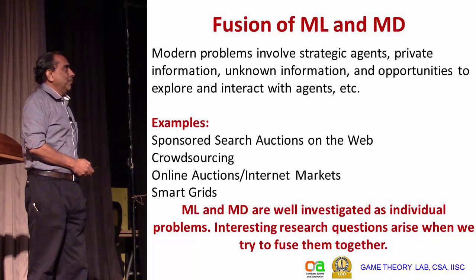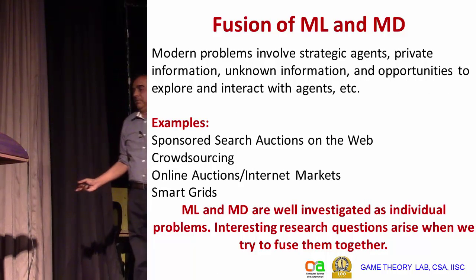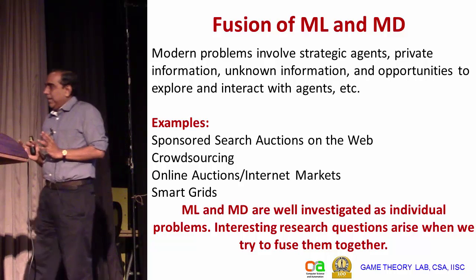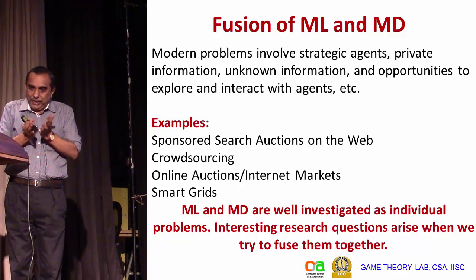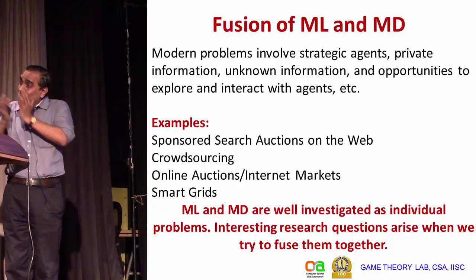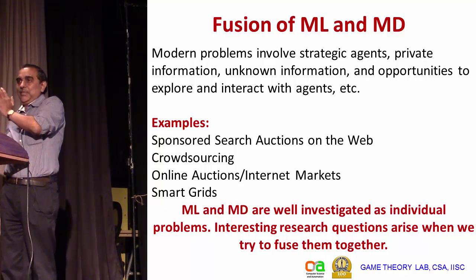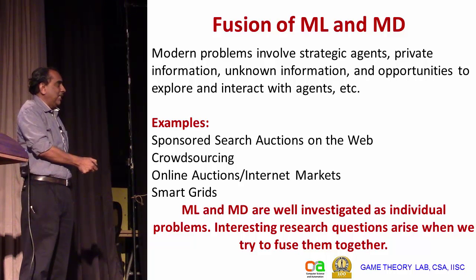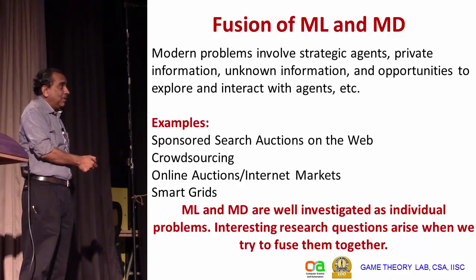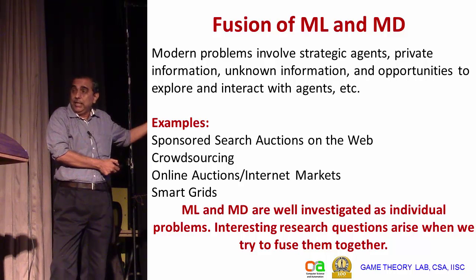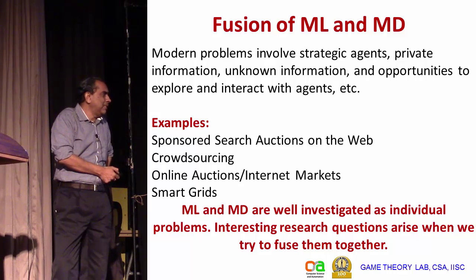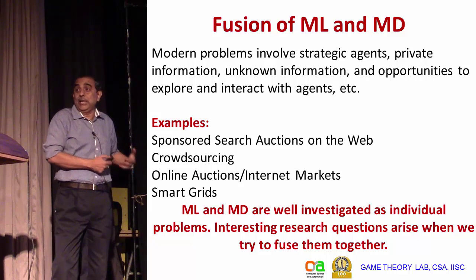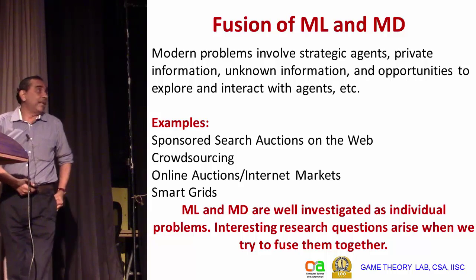Most modern problems involving strategic agents require not only trying to extract private information truthfully but also learning certain parameters of the strategic agents. We have seen the example of crowdsourcing, but sponsored search auctions on the web are another classical example where estimation and elicitation are going on simultaneously. This also happens in online auctions and even in smart grids, where it finds very interesting applications.